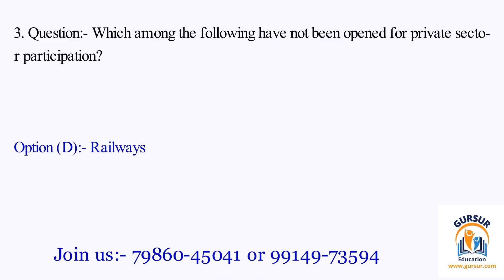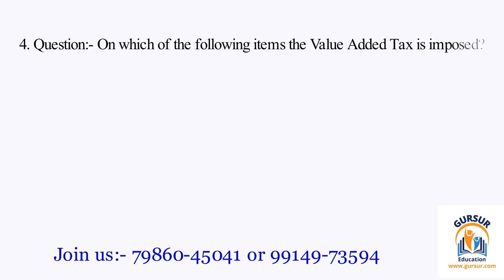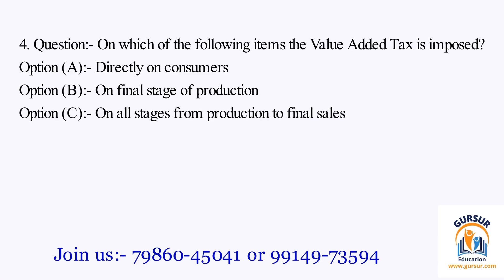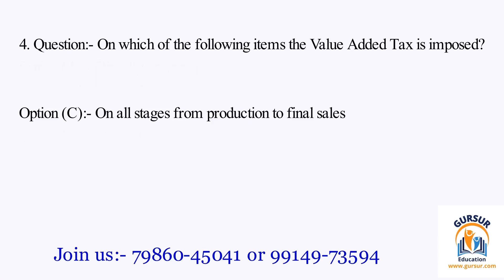Question number 4. On which of the following items the value added tax is imposed? The option A is Directly on Consumers. The option B is On Final Stage of Production. The option C is On All Stages from Production to Final Sales. The option D is None of the above. The right answer of the question is Option C, that is On All Stages from Production to Final Sales.